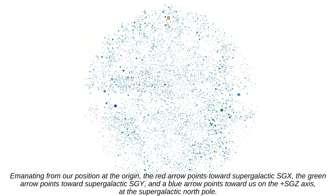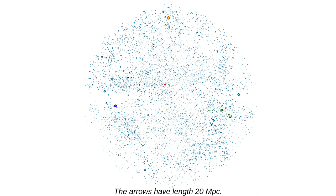Emanating from our position at the origin, the red arrow points toward supergalactic SGX, the green arrow points toward supergalactic SGY, and a blue arrow points toward us on the positive SGZ axis at the supergalactic north pole. The arrows have length 20 megaparsecs.